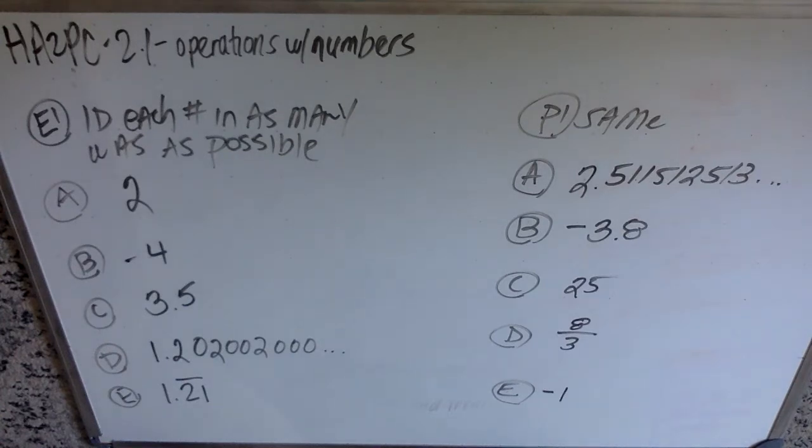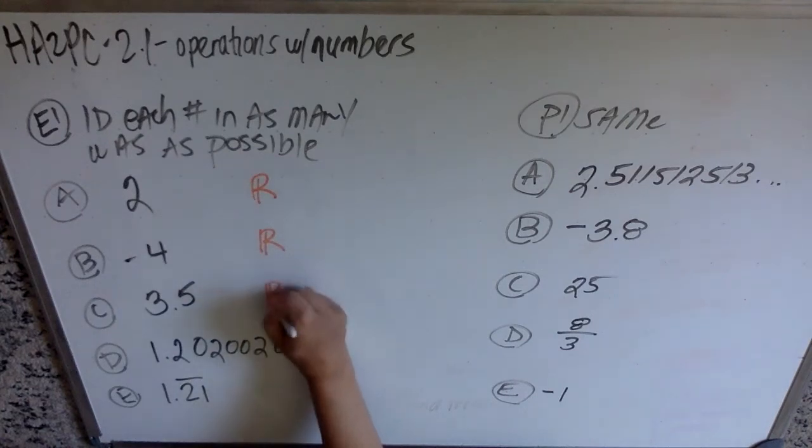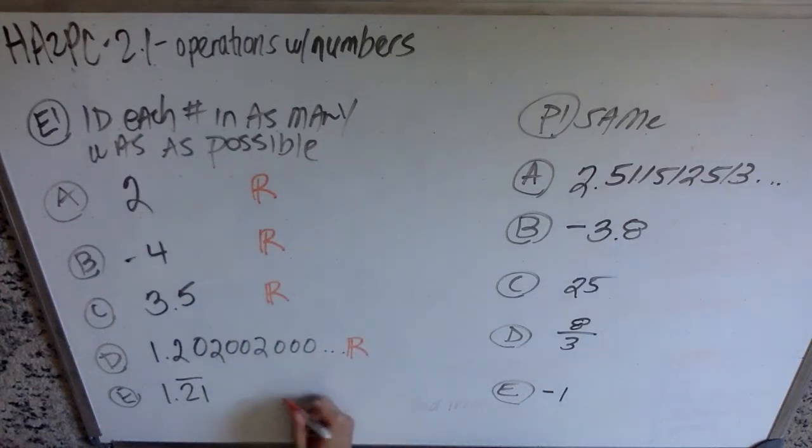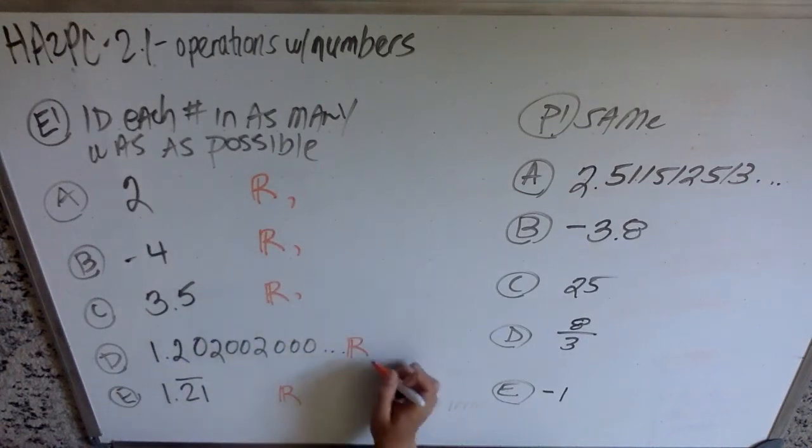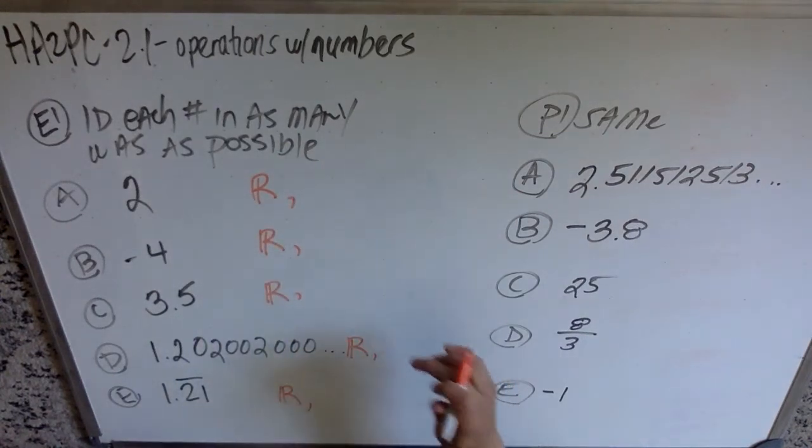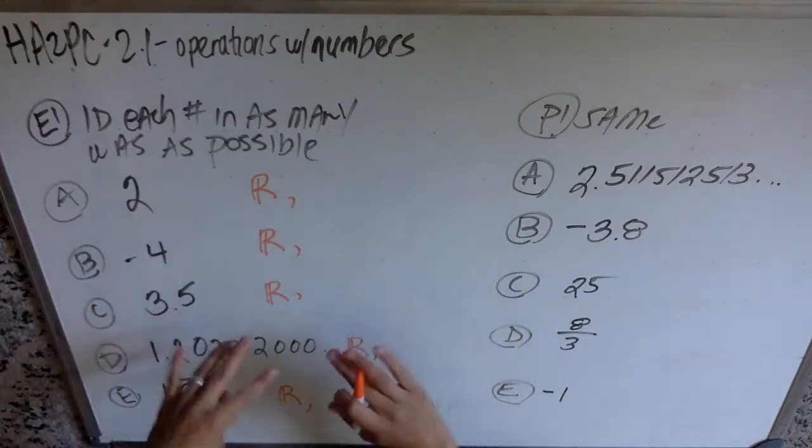I'm gonna do that in orange. The first thing you could totally cheat on is every single one of these is a real number. So, if you wanted to be a lazy bum, you could be like, cool, all of them are real. I'm just gonna go ahead and do real for all of them. Because they are. Every number that we know right now is real.